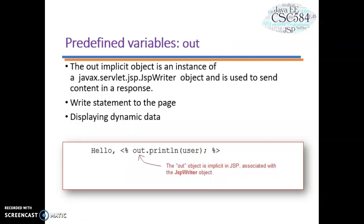Now let's learn about predefined variable Out. The Out implicit object is an instance of javax.servlet.jsp.JspWriter and is used to send content in a response. The JspWriter object contains most of the same methods as the java.io.PrintWriter class. Here is an example where the Out object is used with the println method to display the result to the browser.